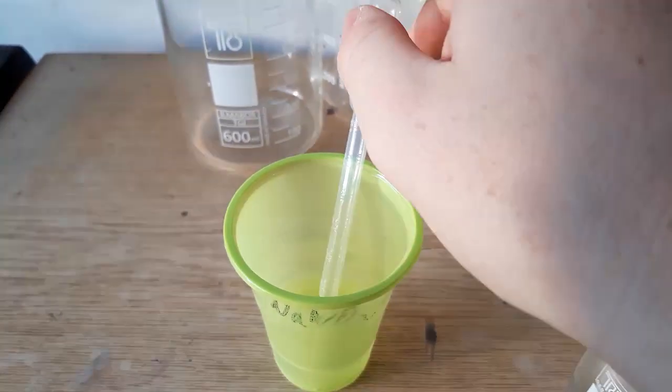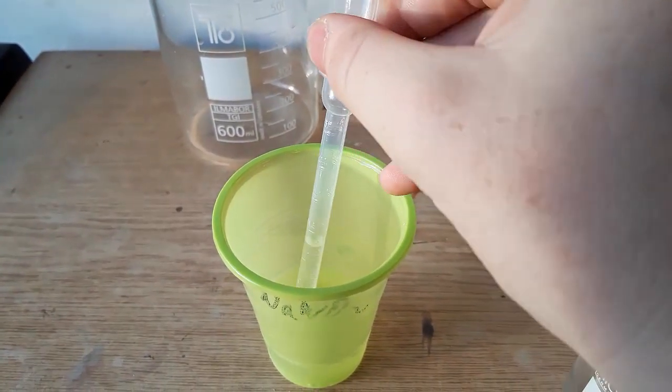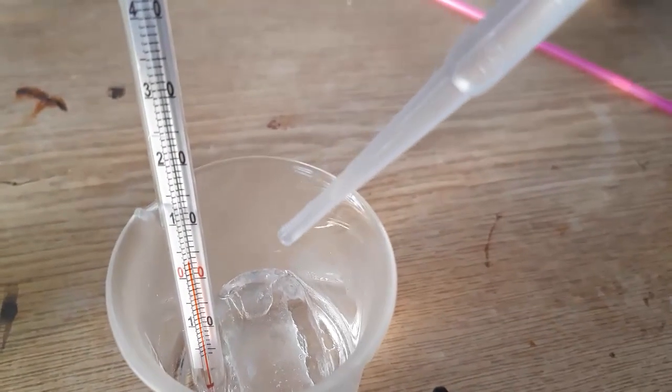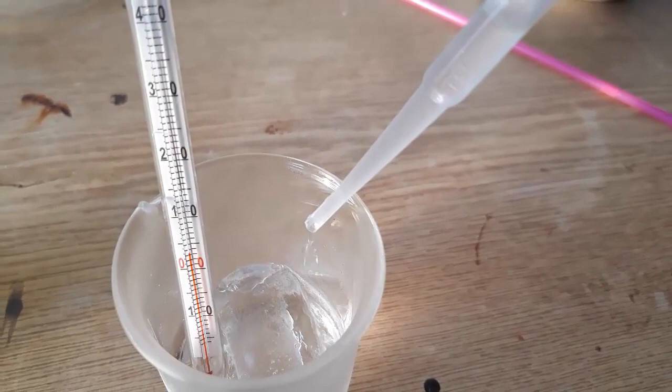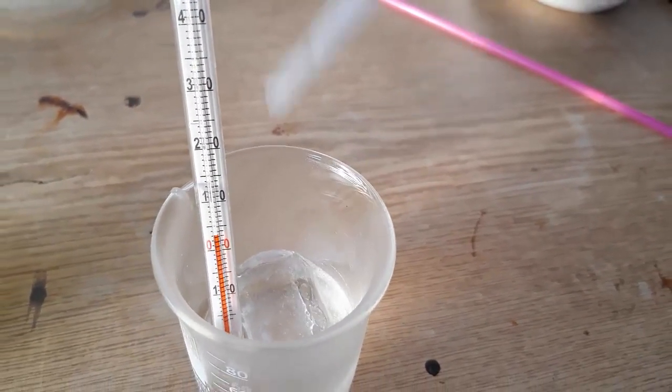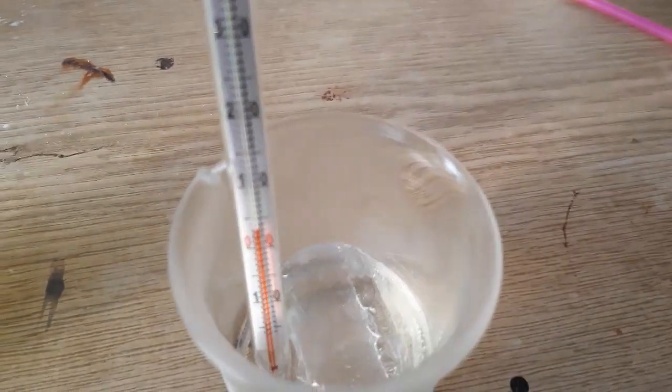By using a plastic pipette, dropwise add the sodium nitride solution to the butanol-HCl mix. After every addition we stir and check the temperature.